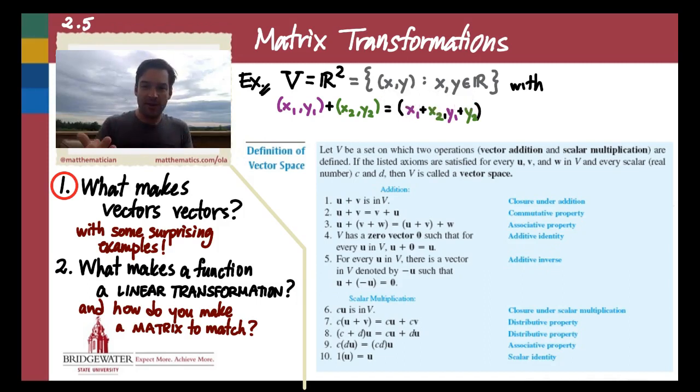And then we define what it means to add two of these ordered pairs. We just add them by components. (x₁, y₁) plus (x₂, y₂) is the sum of the x's and then the sum of the y's. And we define scalar multiplication similarly in a component-wise fashion. (x, y) times the scalar c is just going to be (cx, cy).